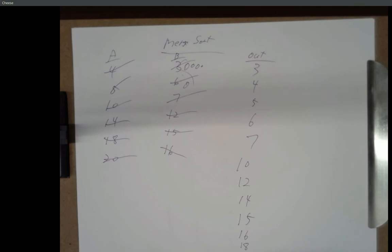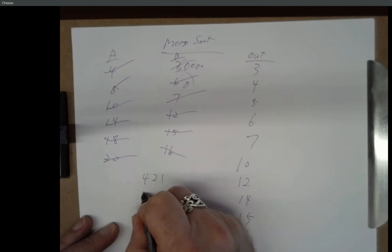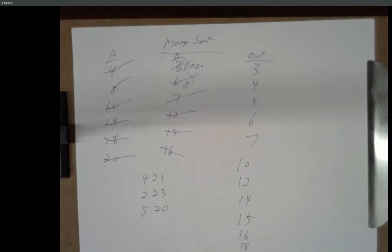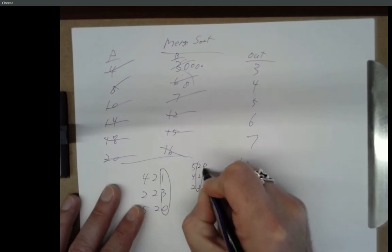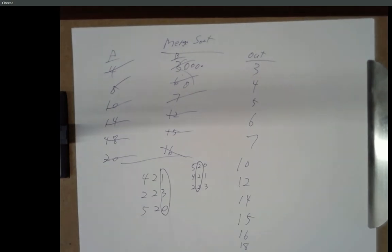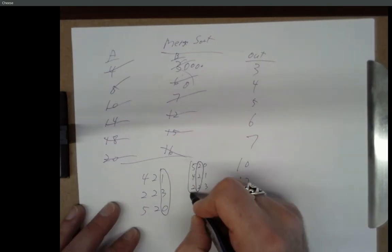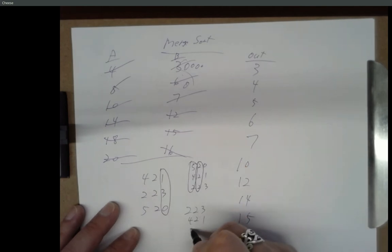Radix sort — you sort character by character. You look at your input as a series of characters and sort starting with the least significant character, the rightmost character. We were thinking of these numbers as three-character strings. Go through and sort according to that rightmost character, which gives us 520, 421, 223. Then sort according to the middle digit — without changing the arrangement of ties. Then sort according to the most significant digit and we get 223, 421, 520.